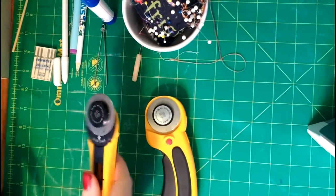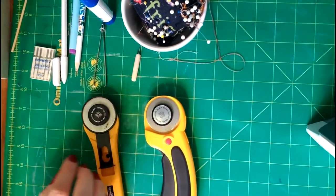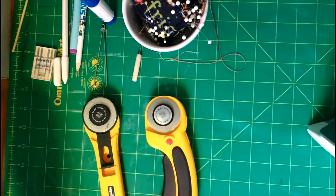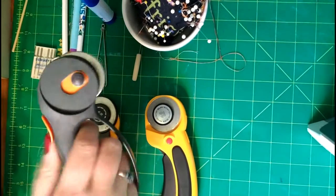This next one is another Olfa 45 millimeter. It has a push release of the blade that must be held down while cutting. This last one is a Fiskars 45 millimeter. It was the first one that I bought. The blade stays out until you press the button on the side.